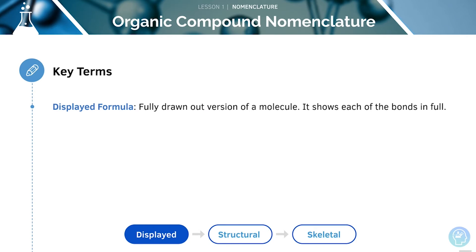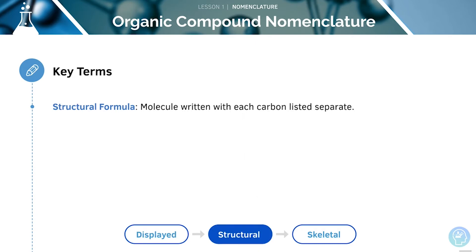The displayed formula is the fully drawn out version of a molecule. This will show each of the bonds in full. We can see the displayed formula for hexane here with each of the bonds drawn out. The structural formula is the molecule written out with each carbon listed separately. This is the structural formula for hexane shown here. Each of the carbons has been listed.